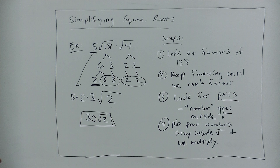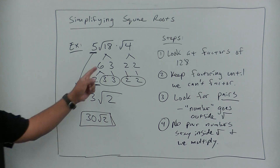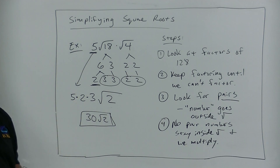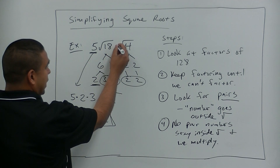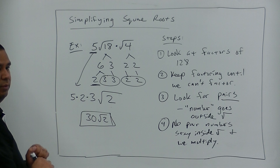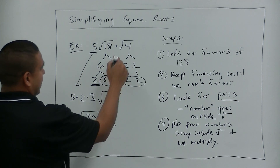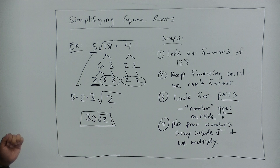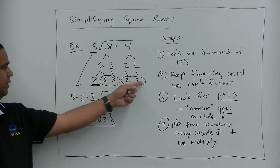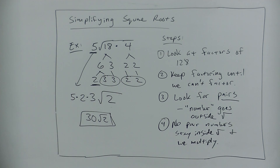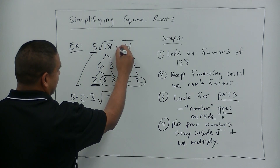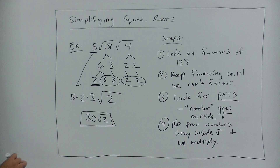Some of you are wondering — but these square roots were separate. You're right, but when we multiply square roots, we just put them together. It's like it was one big square root, so we could just factor out and treat it as one big square root. That's why I said it's kind of a trick question, but it's easy. Very good.